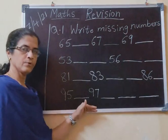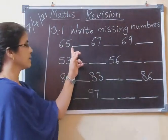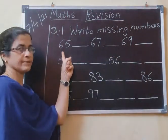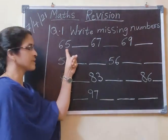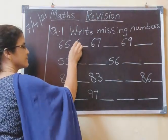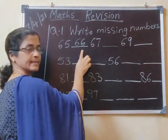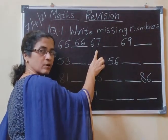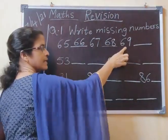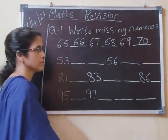Now we are going to see the answers. Come on, now you have to say with me. 65 — after 65, what comes? 66. Right here, 66. 65, 66, 67. After 67, what comes? 68. 69, 70.